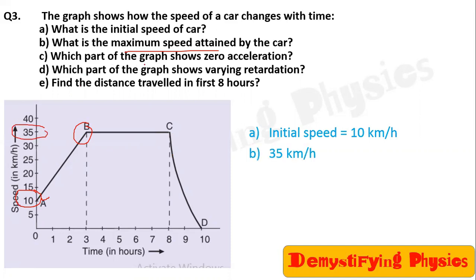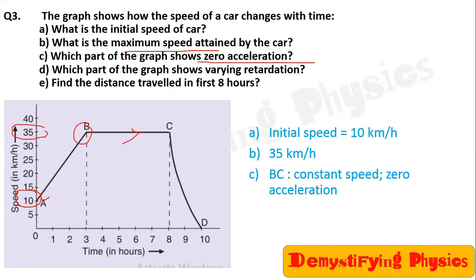Which part of the graph shows zero acceleration? The BC part — there is constant speed, so acceleration will be zero. Which part of the graph shows varying retardation? The CD part.